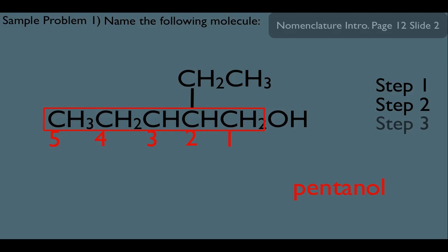Which now brings us to step three. Let's circle and label now. This would be the OH. This would be the ethyl. Which prepares us now for step four. Let's put this all together. We would say 2-ethyl-1-pentanol.